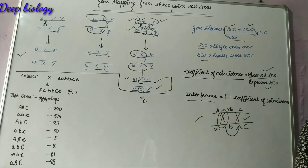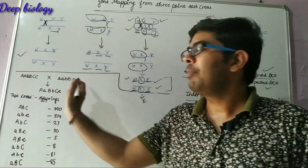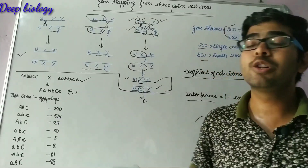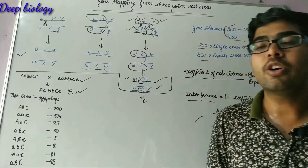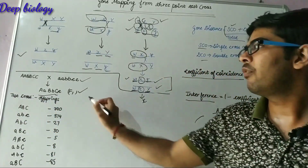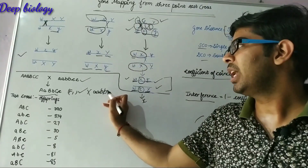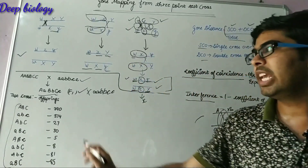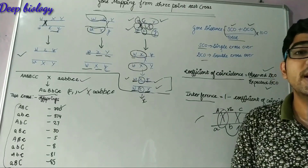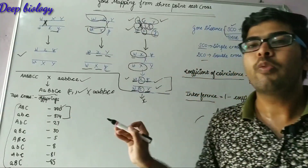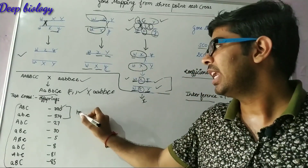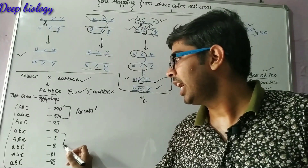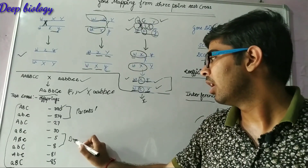Now let's understand this with an example. Suppose one parent is homozygous dominant for all three genes A, B, and C, and another parent is homozygous recessive for the three genes. These two parents are crossed to produce F1. The F1 is then test crossed with the homozygous recessive parent. The resulting offspring combinations and their numbers are provided. The greatest number indicates the parental type and the lowest number indicates the double crossover type.